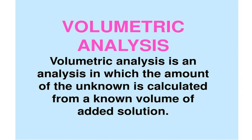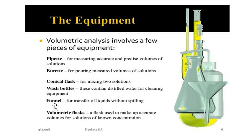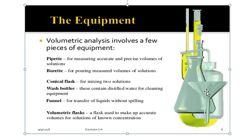The equipment we use in volumetric analysis — first, the pipette, which is used for measuring the accurate and precise volume of solution and to pipette out the solution. Then the burette, which is used for pouring the measured volume of solution. Then the conical flask, which is used for titration — for mixing the two solutions: titrate and titrant. Then the wash bottle, which contains distilled water for cleaning the equipment. Then the funnel, which is used for transfer of liquids without spilling.